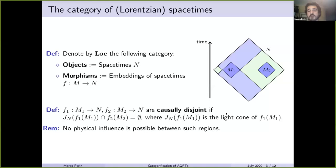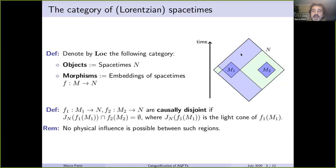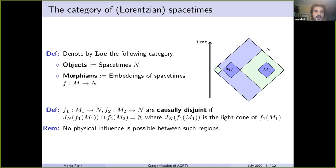There is already a bit of mumbo-jumbo here — we have to explain what the light cone is. The light cone of m1 is simply this light blue area. Physically, since nothing travels faster than the speed of light, if something happens in region m1, its effect won't be felt by all points in n, but only the points in this light blue area can be affected. For two regions to be causally disjoint simply means that whatever happens in m1 won't influence m2 and vice versa — there is no causal relationship between the two.